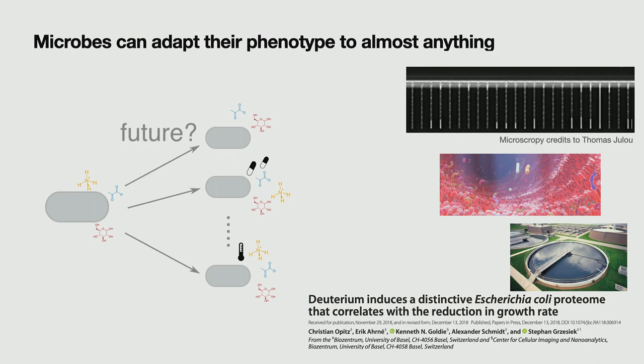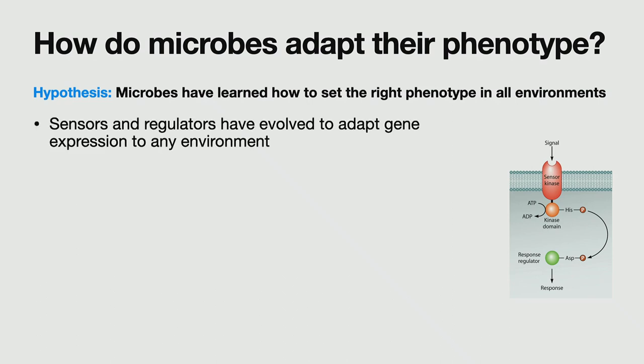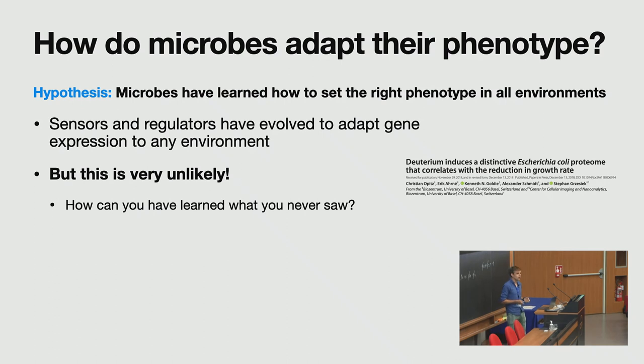Well, one theory that people would like to give, it's a bit extreme how I present it, is that microbes have just learned by evolution to set the right phenotype in all these environments. So sensors have evolved such that they can know in what environment they are, and then they have regulators that know what phenotype fits this environment and that is how it goes. But this is clearly wrong. How can you have learned what you never saw, as in the case with the deuterium? So evolution cannot have shaped you to address that.